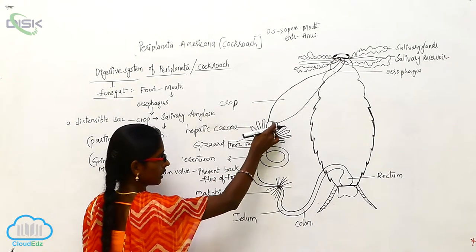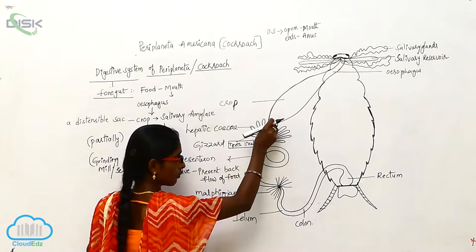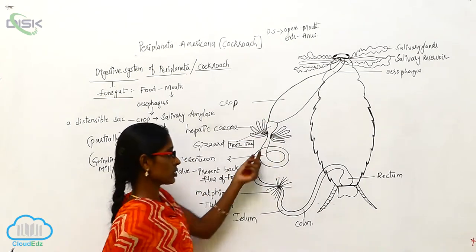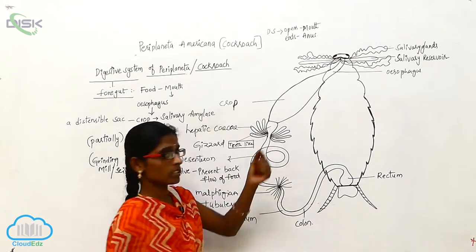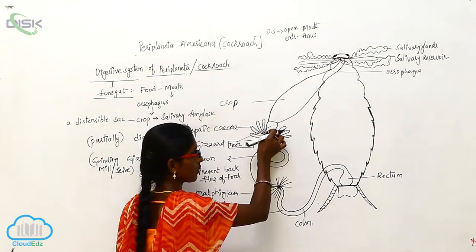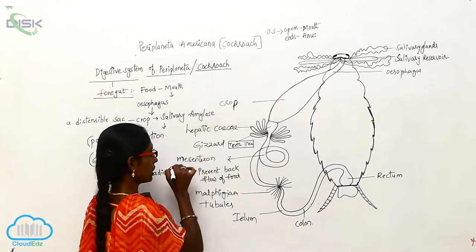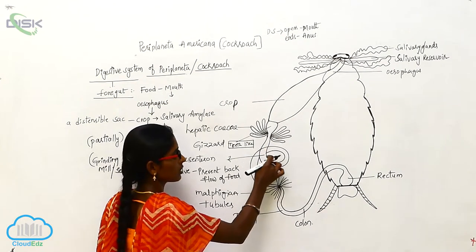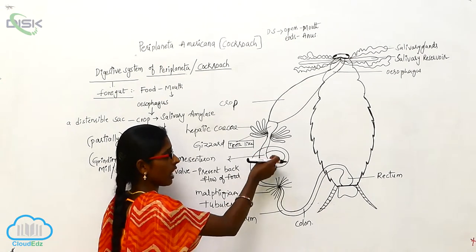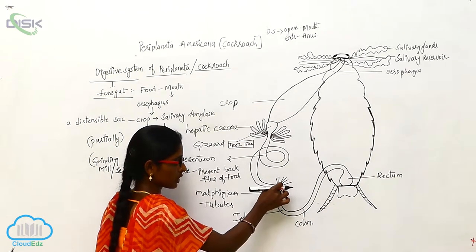From the gizzard, here the hepatic caecae region is present. Here the food material undergoes complete digestion. After digestion, the hepatic caecae region allows the food material to undergo absorption. From this it enters into the mesenteryon, or midgut. In the mesenteryon, some undigested or unabsorbed food material goes to the Malpighian tubules.